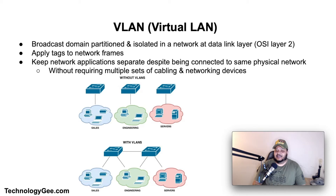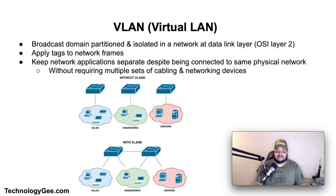A VLAN, or virtual local area network, is any broadcast domain that is partitioned and isolated in a computer network at the data link layer, or OSI layer 2. LAN is the abbreviation for local area network, and in this context 'virtual' refers to the physical object recreated and altered by additional logic. VLANs work by applying tags to network frames and handling these tags in network systems, creating the appearance and functionality of network traffic that is physically on a single network but acts as if it is split between separate networks.